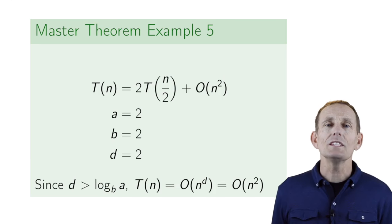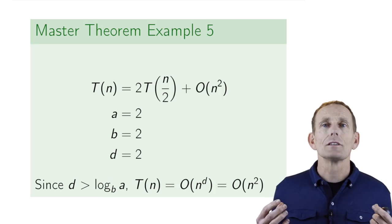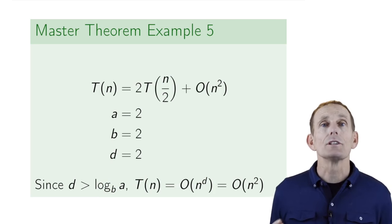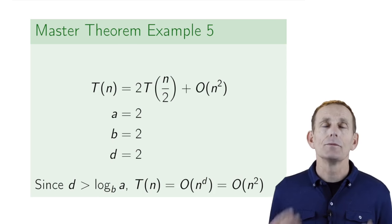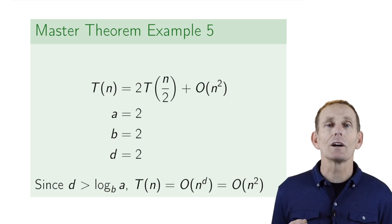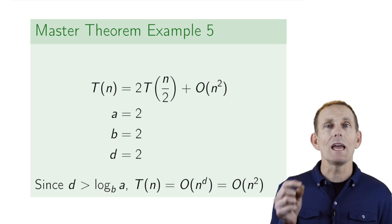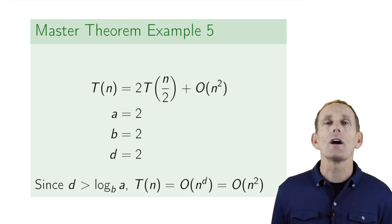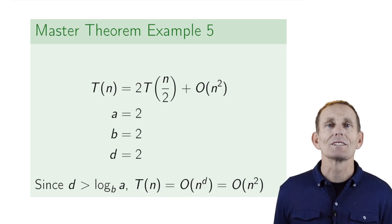So what we've seen now is that we have this Master Theorem that allows us for most recurrences, having to do divide and conquer, which fit into this general formula, allows us to easily figure out which case we are based on the relationships between a, b, and d, and then figure out the result quite quickly. In our next video, we'll look at a proof of why the Master Theorem works.